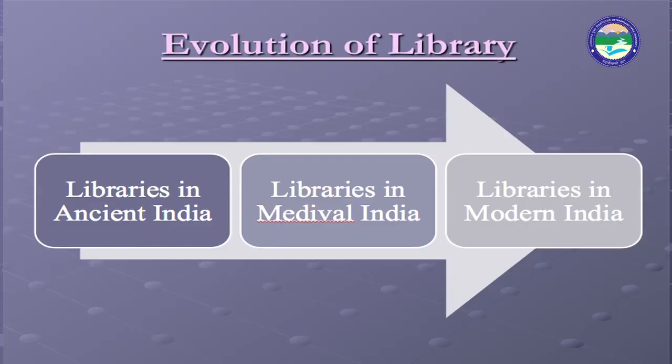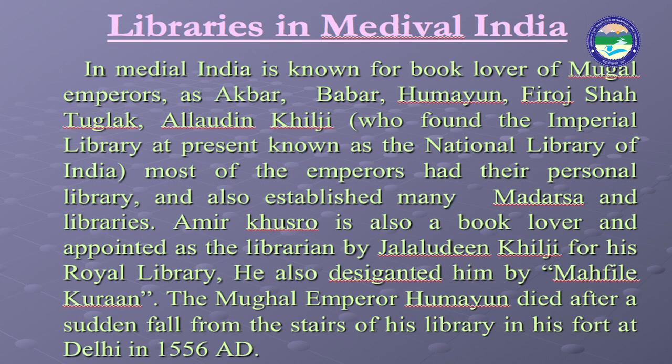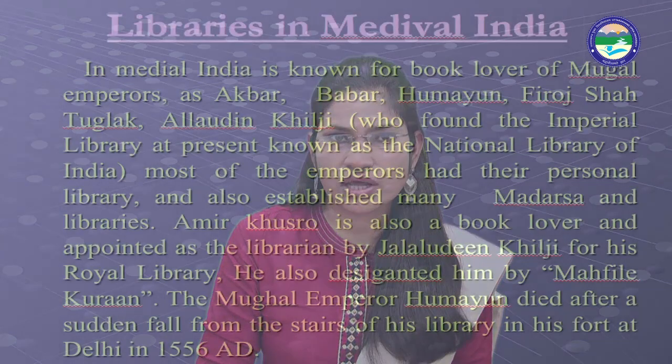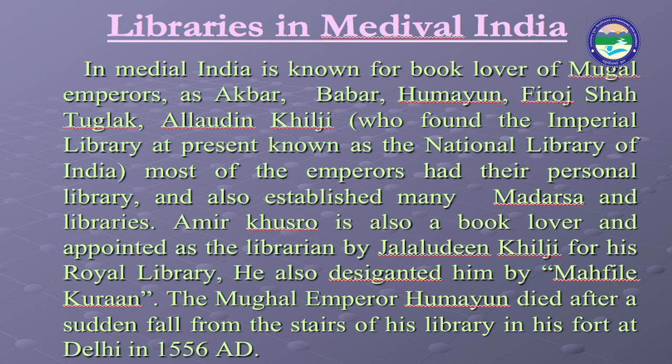In medieval India, Mughal emperors such as Akbar, Babur, Humayun, Firoz Tughlaq, and Alauddin Khilji were known as book lovers. Alauddin Khilji founded the imperial library, now known as the National Library of India. Most emperors had personal libraries and established many madrasas and libraries. Amir Khusrau was also a book lover and was appointed as the librarian of Jalaluddin Khilji for his royal library. The Mughal emperor Humayun died after a sudden fall from the stairs of his library in his fort at Delhi in 1556 AD.